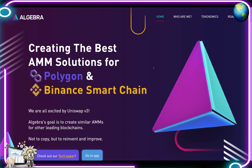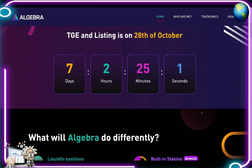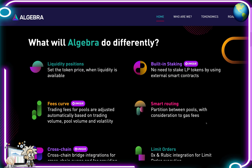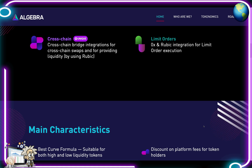They're creating the best AMM solutions for Polygon and Binance Smart Chain. Their token generation event and listing is scheduled for the 28th of October - that's in seven days. Their liquidity positions let you set the token price when liquidity is available. There's built-in staking with no need to stake LP tokens via external smart contracts. Trading fees for pools are adjusted automatically based on trading volume, pool volume, and volatility. There's smart routing between pools with consideration to gas fees, cross-chain bridge integrations using Rubik, limit orders, and 0x and Rubik integration for limit order execution.